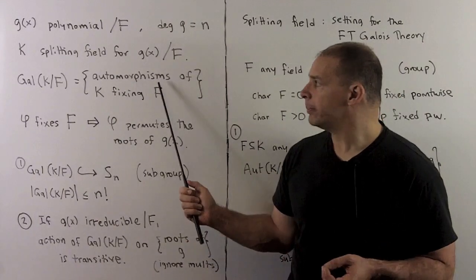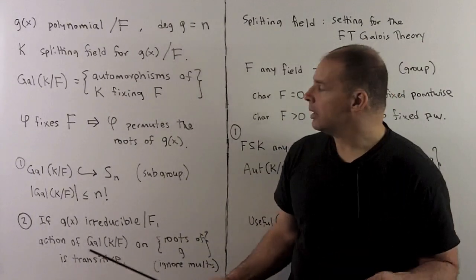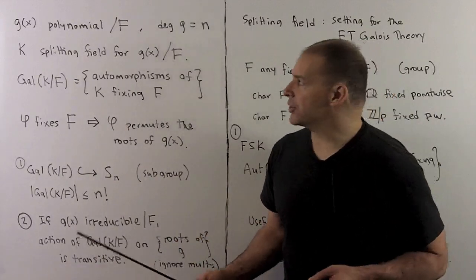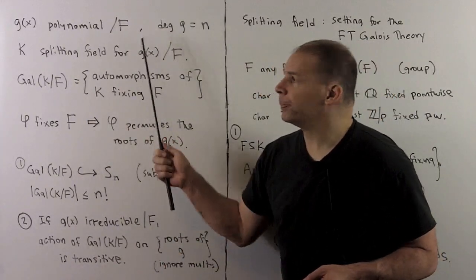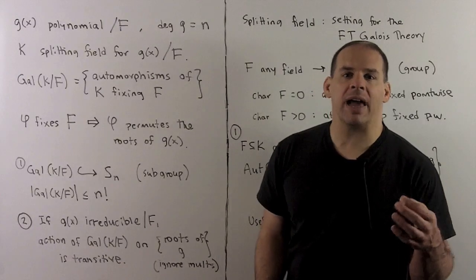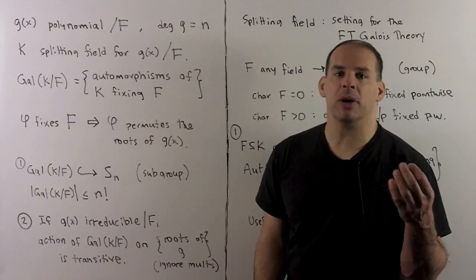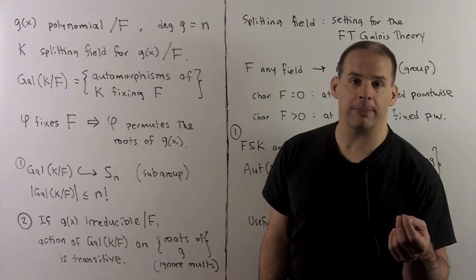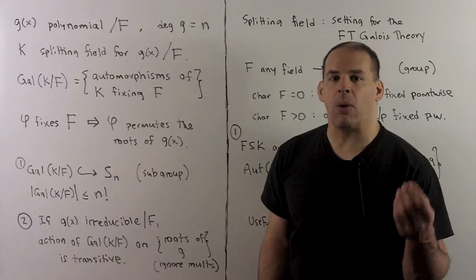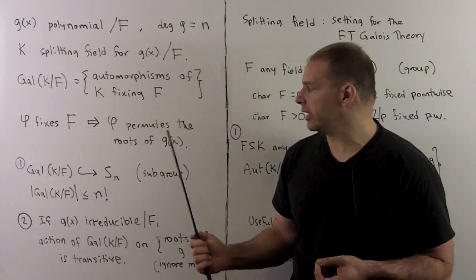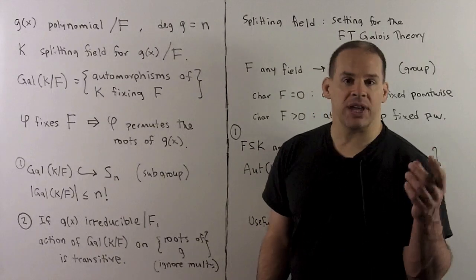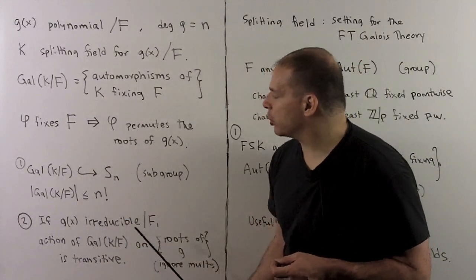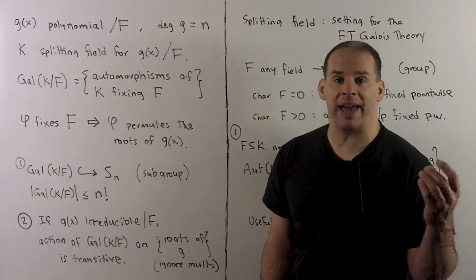We saw this as a group, and we noted that because these automorphisms fix F pointwise, they fix the coefficients of our polynomial, and from that any of these automorphisms must permute the roots of G. To reinterpret, we have a group action of the Galois group on the set of roots of G. This action is faithful, so we can identify the Galois group with a subgroup of S_N, the symmetric group on N letters.